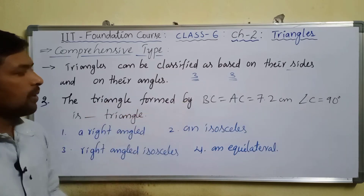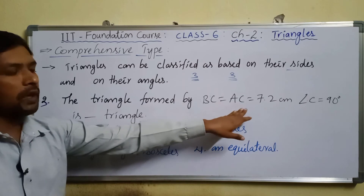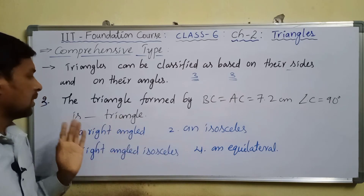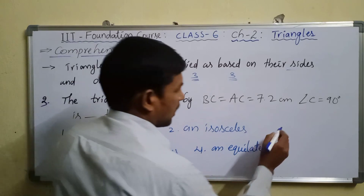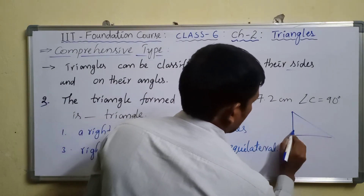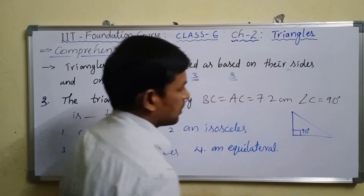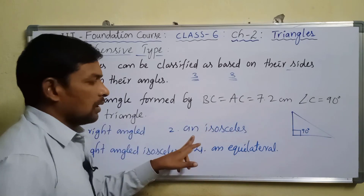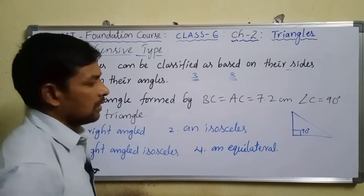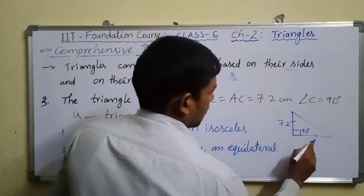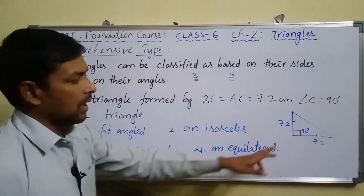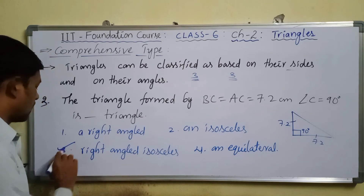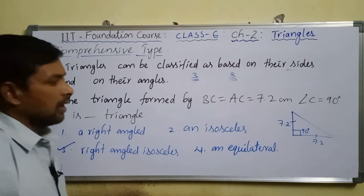Third comprehensive question: a triangle with BC = AC = 7.2 cm and angle C = 90°. Since angle C is 90°, it is a right angle triangle. And since two sides are equal — both 7.2 cm — it is also isosceles. Therefore this is a right-angled isosceles triangle.